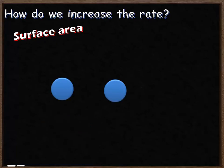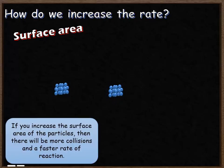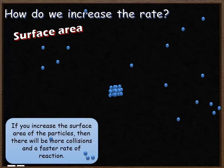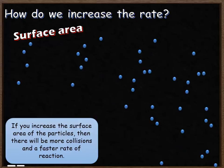We can also increase the rate of reaction by increasing the surface area. If we take particles and break them into smaller pieces, the surface area of those particles is now much, much bigger, with lots of extra spaces for reactions to occur. Increasing the surface area means there will be more collisions and therefore a faster rate, as opposed to just having large particles with a small surface area.